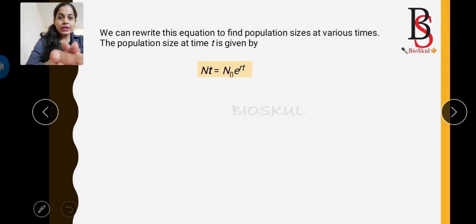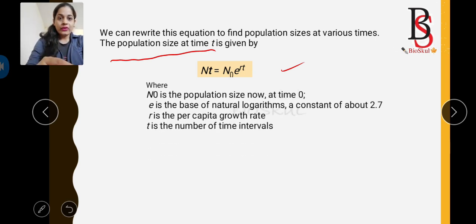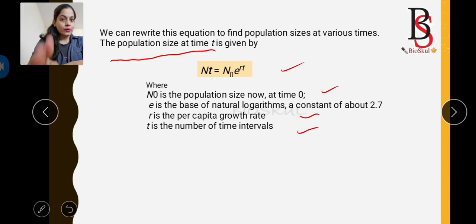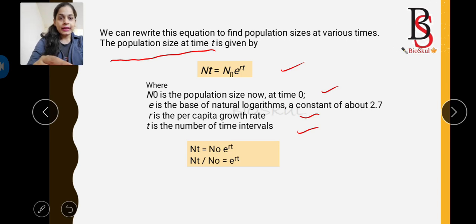We can rewrite the equation to find population size at various times. The population size at time t is: N(t) = N₀ × e^(rt), where N(t) is population size at time t, N₀ is the initial population size, e is the base of the natural logarithm, r is the per capita growth rate or intrinsic rate of growth, and t is the number of time intervals. Exponential growth has two key formulas: dN/dt = rN and N(t) = N₀ × e^(rt).